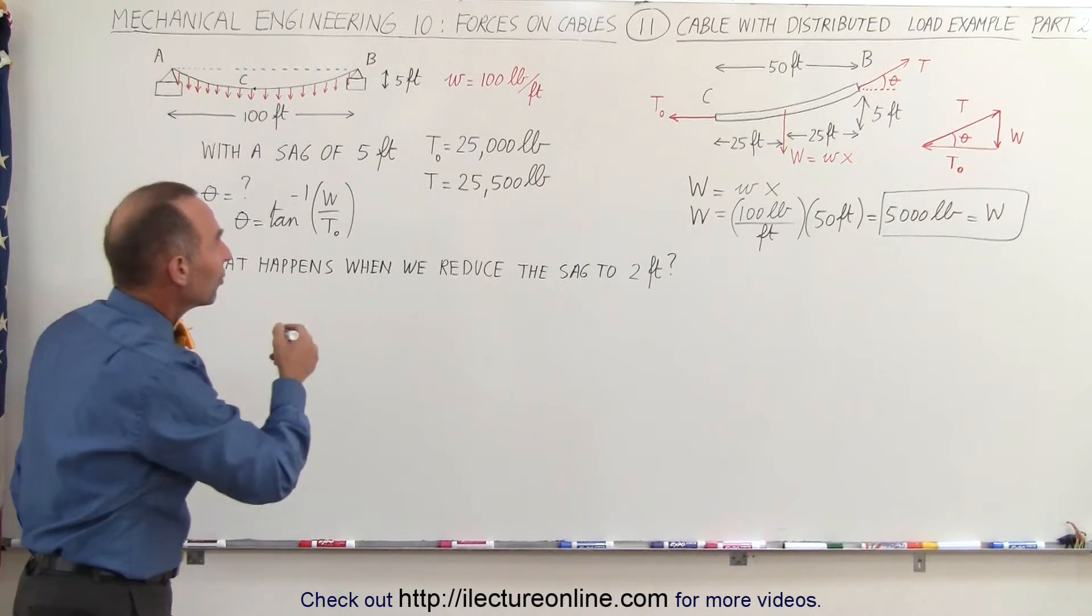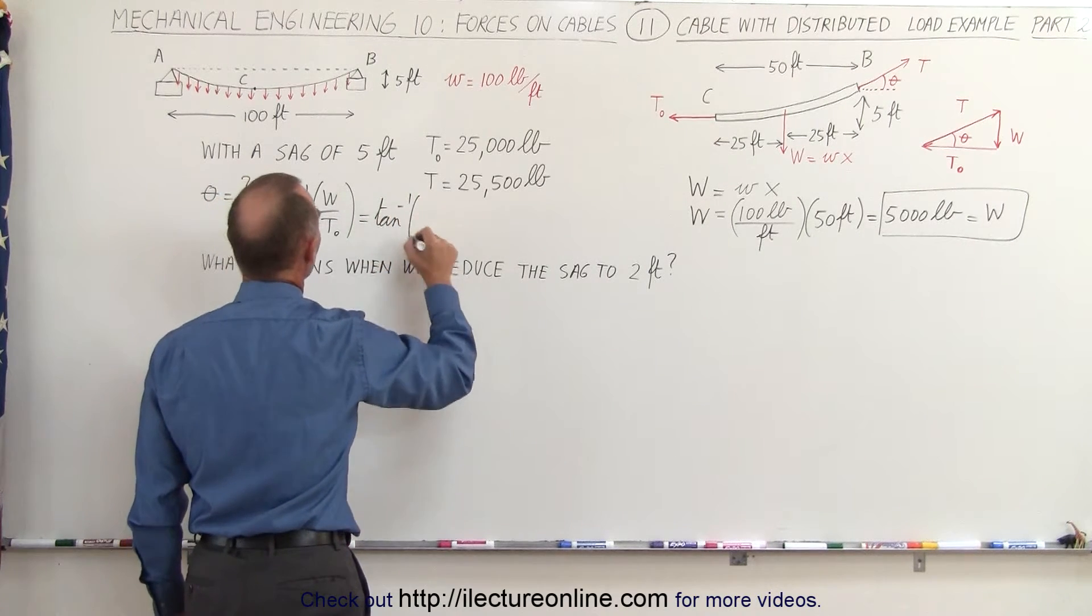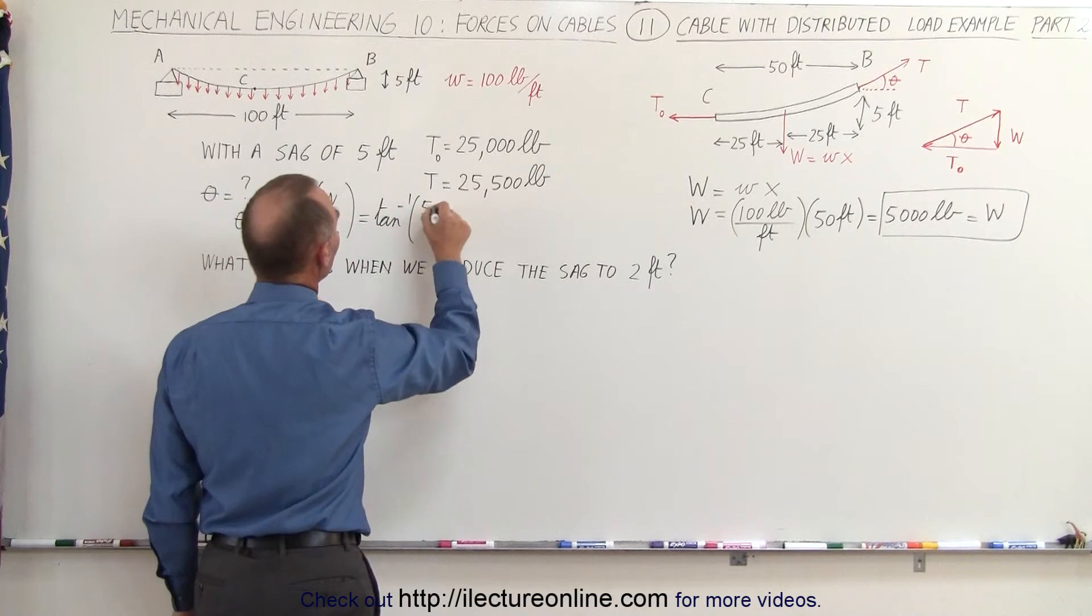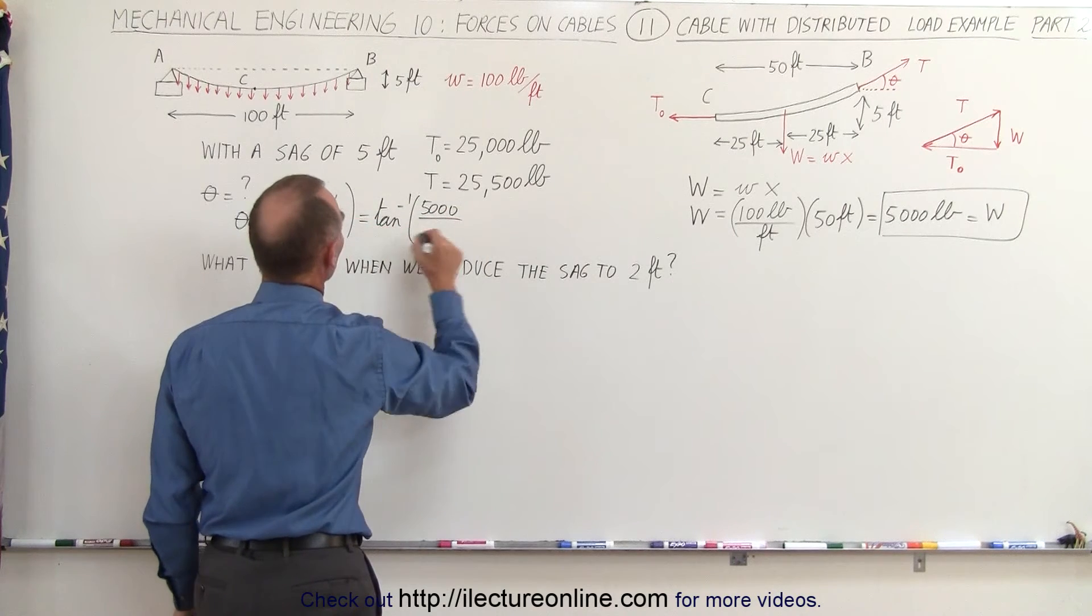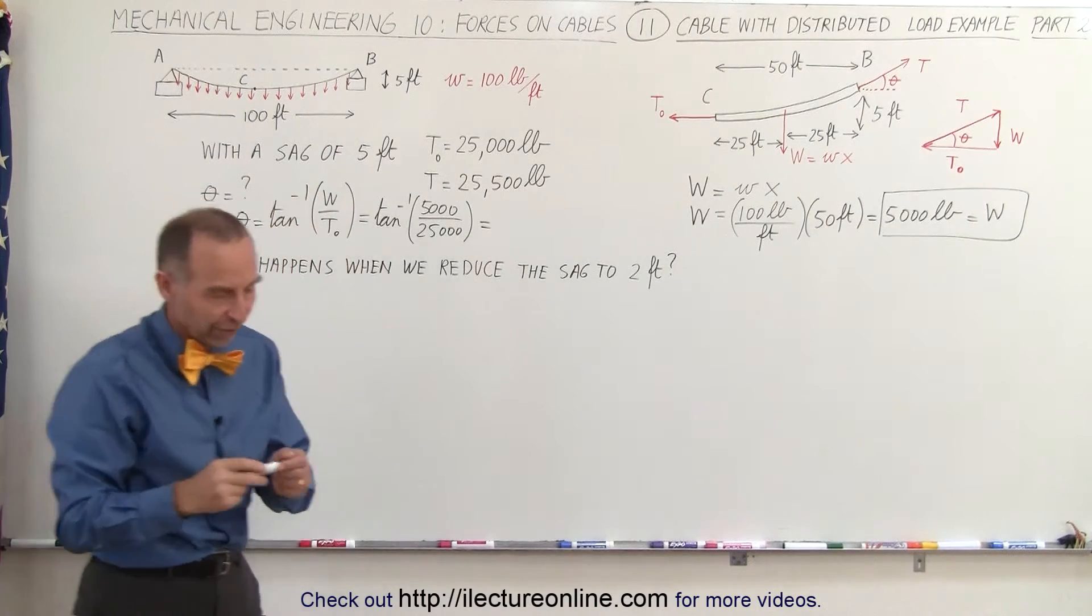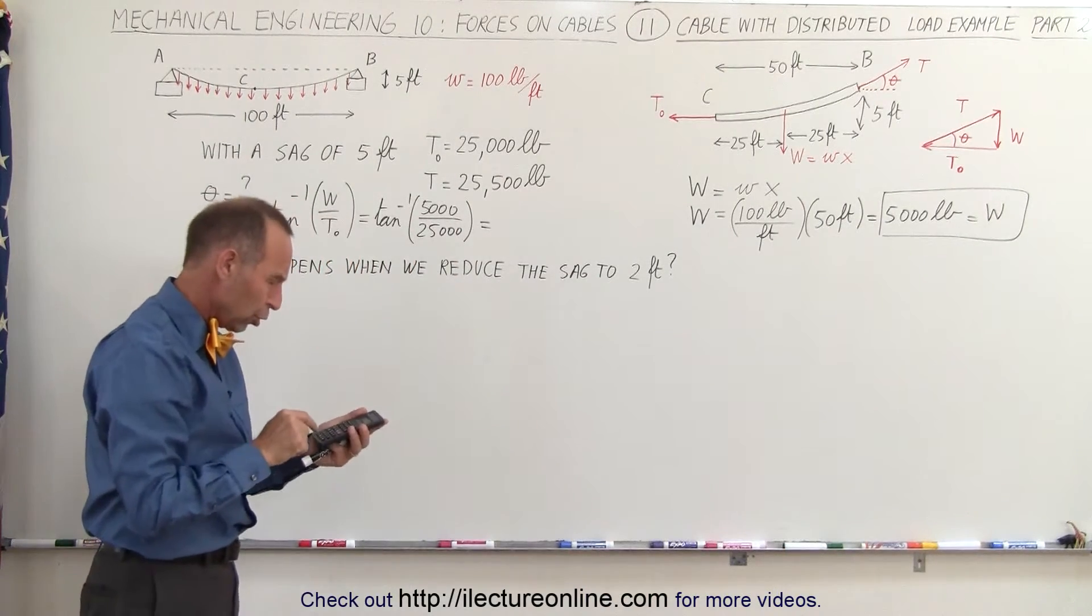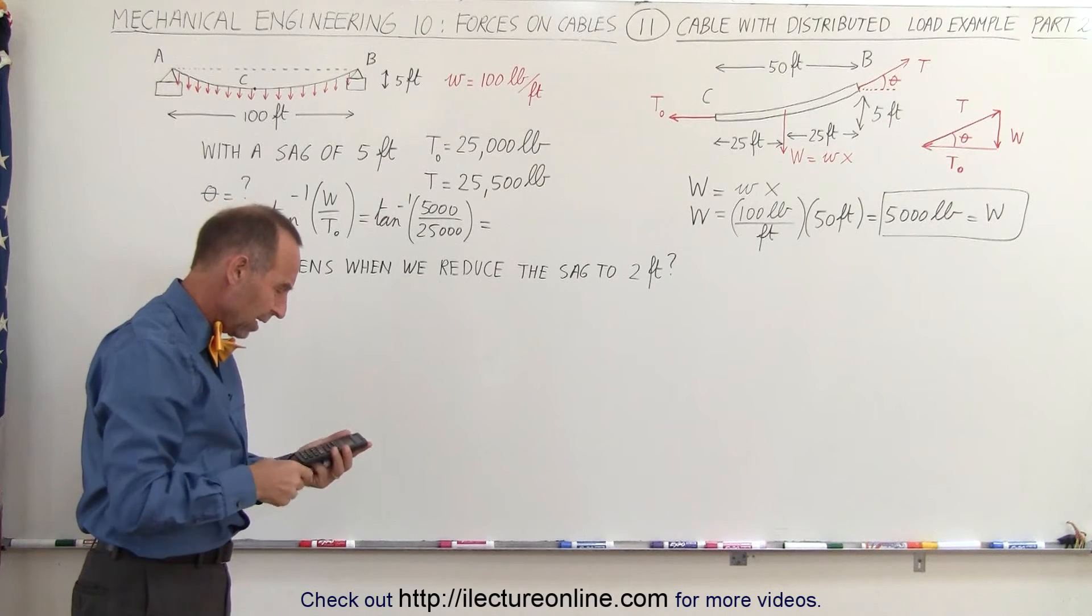Now when we plug in the numbers let's see what we get. This is equal to the arc tangent of the load, which would be 5,000 pounds divided by the horizontal tension of 25,000 pounds, so basically we're taking the arc tangent of one-fifth.